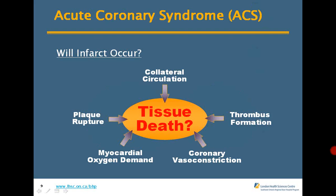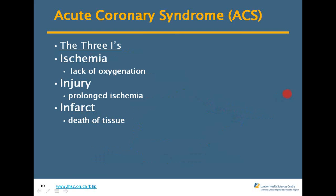With acute coronary syndrome, factors such as collateral circulation, plaque rupture, increased myocardial O2 demand, coronary vasoconstriction, and thrombus formation all lead to tissue death. The three I's are: ischemia — lack of oxygenation; injury — prolonged ischemia; and infarct — death of tissue.